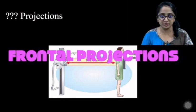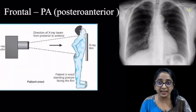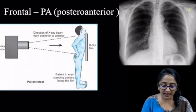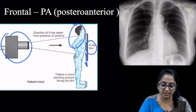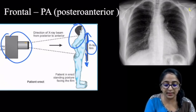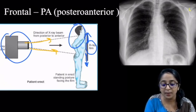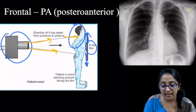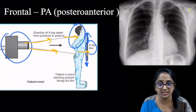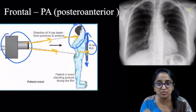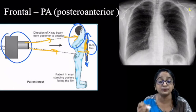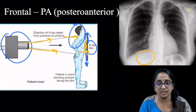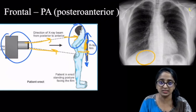First, about the frontal projection. In the frontal PA projection, we have the x-ray tube here, the patient here, and the x-ray film or the image receptor here. The x-ray beams are emitted from the x-ray tube, entering the posterior aspect of the patient's chest and exiting by the anterior aspect, hitting against the image receptor kept touching the patient's anterior aspect of the chest. This is how the chest radiograph in a PA projection looks like.